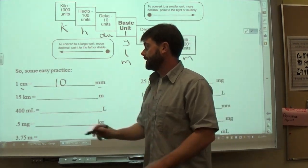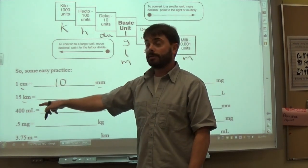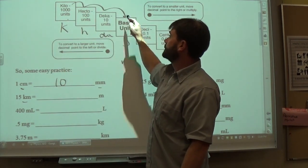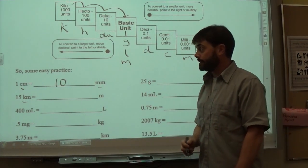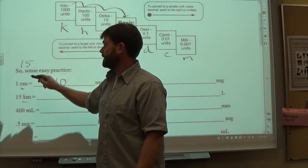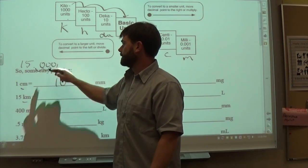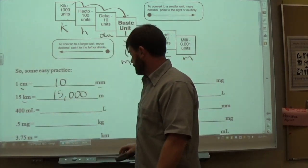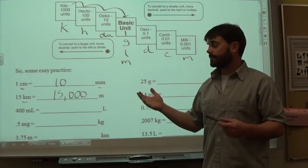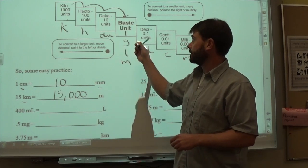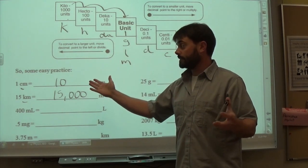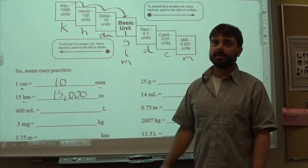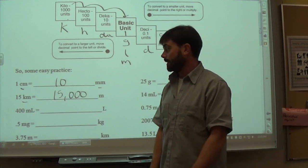The next problem converts 15 kilometers to meters. Starting at kilo and following the stairs to the base unit, you go 3 steps to the right, which is the same as multiplying by 1,000. Moving the decimal three places to the right and filling in zeros gives you 15,000 meters. This makes sense because kilo means a thousand, so 15 kilometers is literally 15,000 meters.